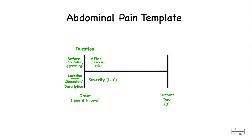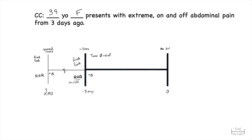Now that we took our notes, let's present the patient. We always write our chief complaint at the top. Then we have those notes we took during the encounter. A 39-year-old female presents with extreme on and off abdominal pain from three days ago. The patient reports that three days ago she had severe 8 out of 10 pain located in her right upper quadrant that was on and off in nature. This pain started shortly after she ate fried food. It lasted about three hours.